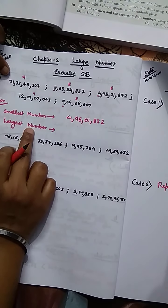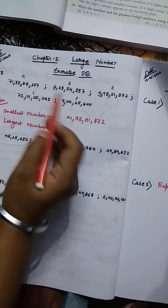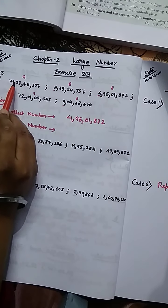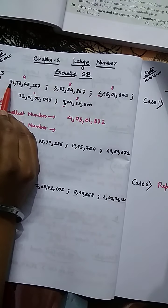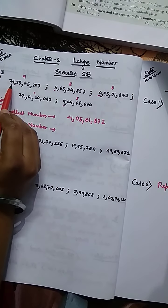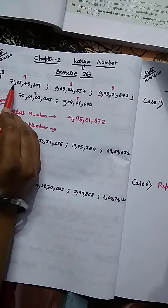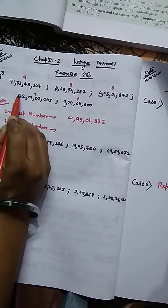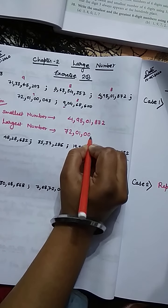Now come to the largest number. To find the largest, the number with the most digits wins — here there are two numbers with 9 digits each. Both have the same digit count, so we compare from the left side. Here is 7 and here is also 7, so we go to rule number 2b and check the second digit. Here we get 1 and here we get 2. Since 2 is greater than 1, that number — 72 crore 1,43... — is the largest number.